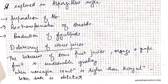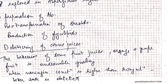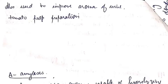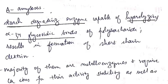The main application of naringinase is in debittering of citrus juice. The bitterness of some fruit juices like orange and grapefruit is undesirable. When naringinase concentration is higher than 20 mg per milliliter, the bitter taste is detected. It is also used to improve the aroma of wine and tomato pulp preparation.